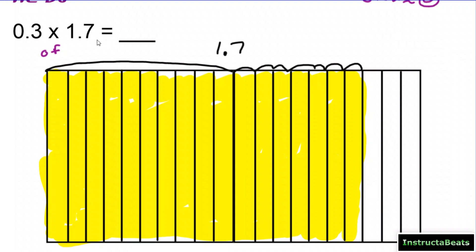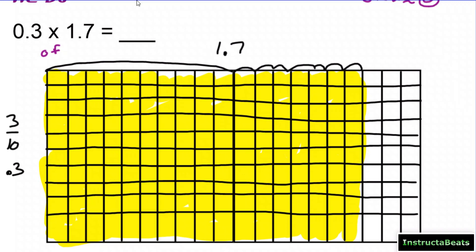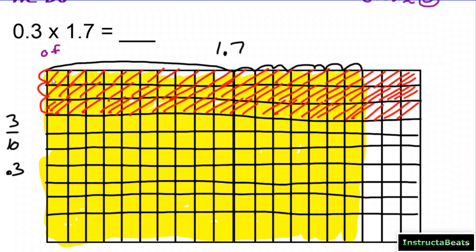Now I want to know what is 3 tenths of that 1 and 7 tenths. I write down my 3 tenths on the side, then split the entire area model horizontally into 10 equal groups — that's because my denominator is 10. Even written in decimal form, 3 tenths still has denominator 10. My numerator is 3, so I shade in 1, 2, 3 tenths with a diagonal line, shading all the way down.